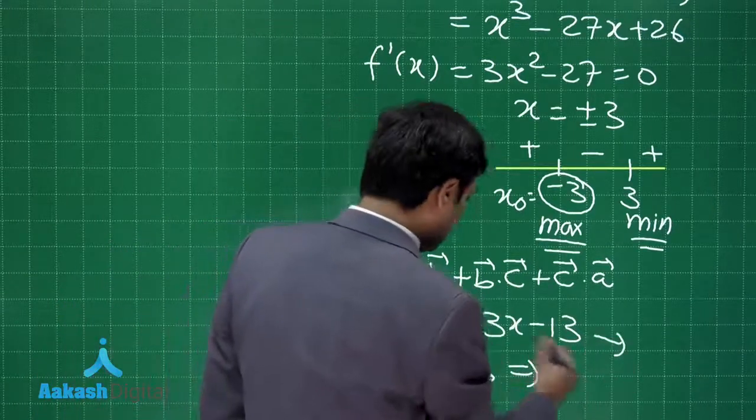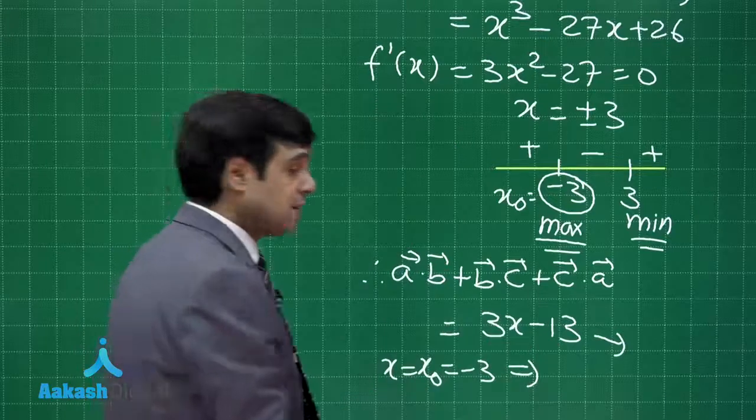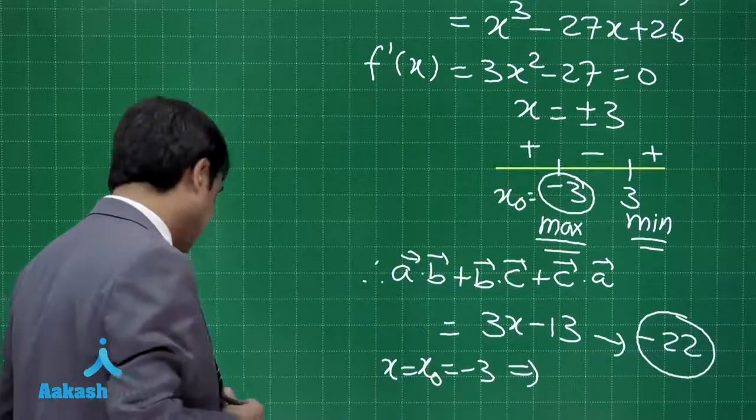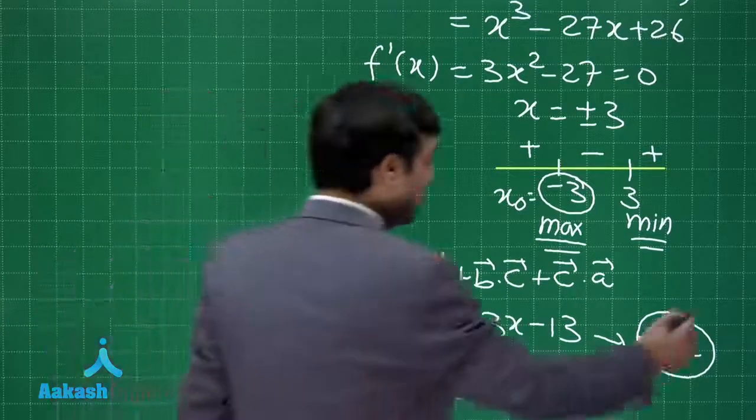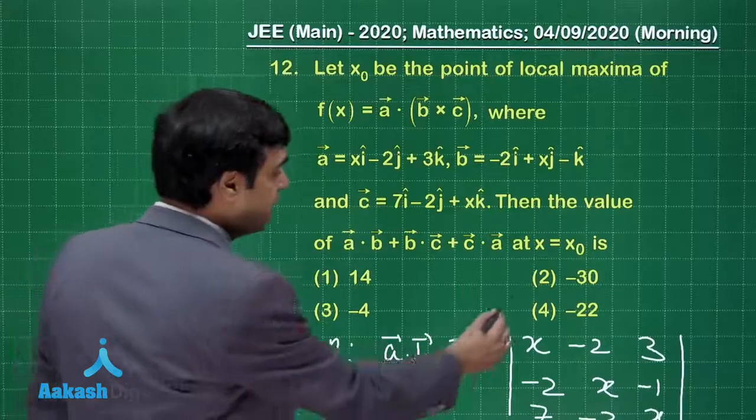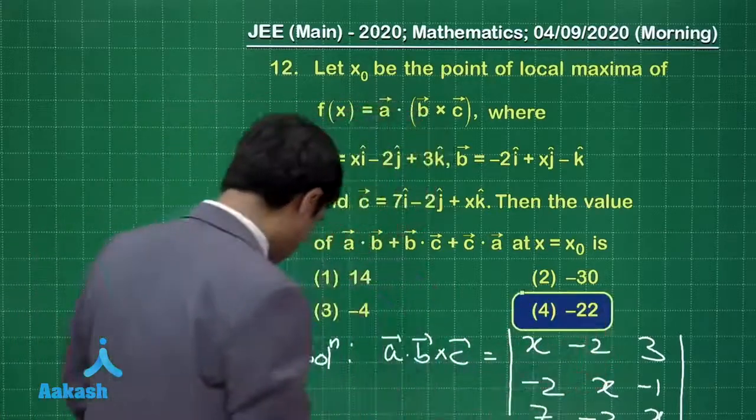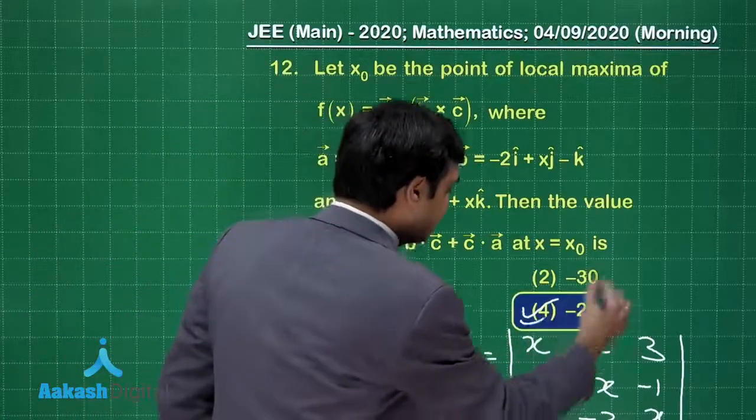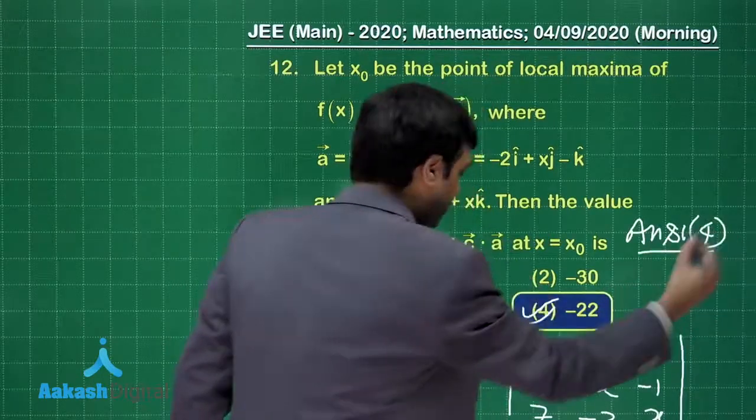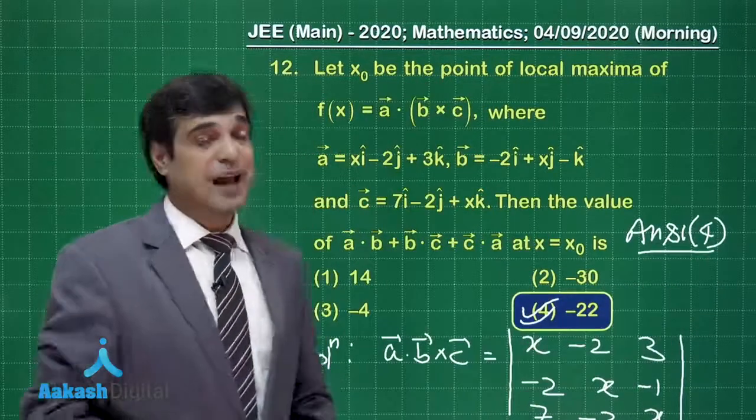Now the time to put x is equal to x naught, which is minus 3. So this value changes to minus 9 minus 13, that is minus 22. So the correct answer for this question is minus 22. Time to check from the given options: we see option 4 includes this answer. So yes, this is what we were looking for.